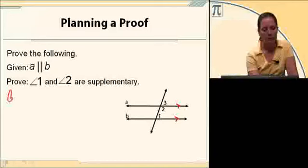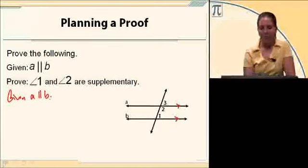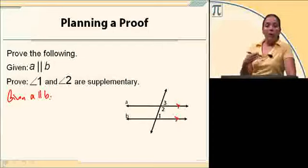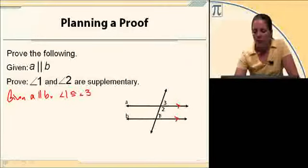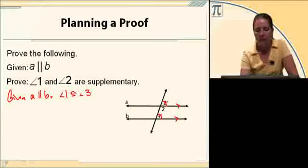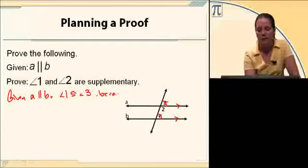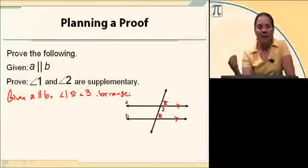So given A parallel to B, I can say that angle 1 is congruent to angle 3 because corresponding angles are congruent.